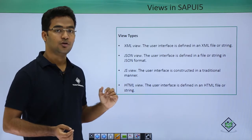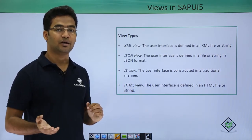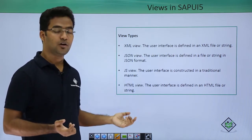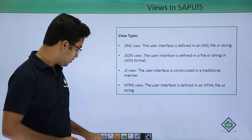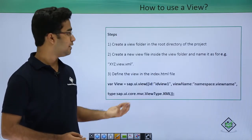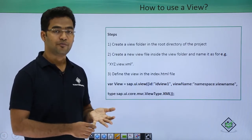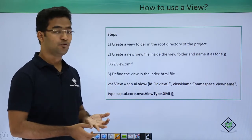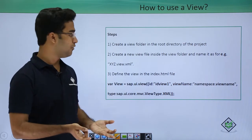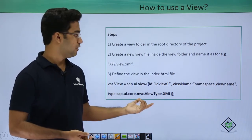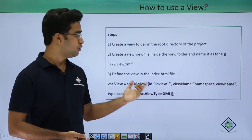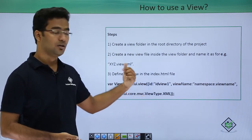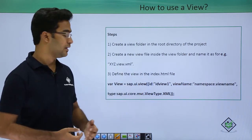We also have the HTML view. In the previous video where we saw the Hello World application example, I used index.html file where I just coded the Hello World message in the HTML file itself. Moving on to how to use a view — there are basically 3 steps: one is to create the view folder in the web content, then we have to create the view file in the view folder itself, and then we have to instantiate the view in the index.html file. If we are using routing, you could do the instantiating part in the manifest.json file itself.